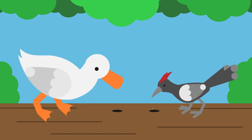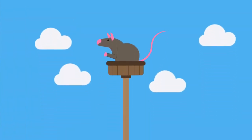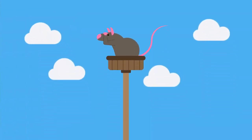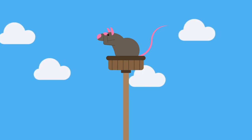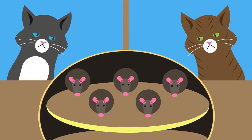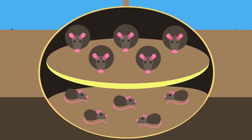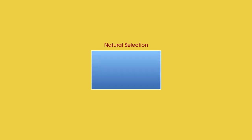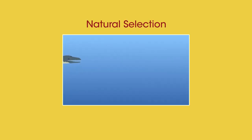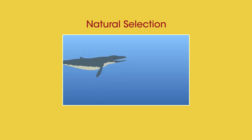This means that some individuals are better adapted to their environment than others, allowing natural selection to take place. For example, in a population of rats, some will have better eyesight than others. These will be able to avoid being eaten by predators, so are more likely to survive, reproduce, and pass on this advantage to their offspring. If you want to learn more about natural selection, watch this video.